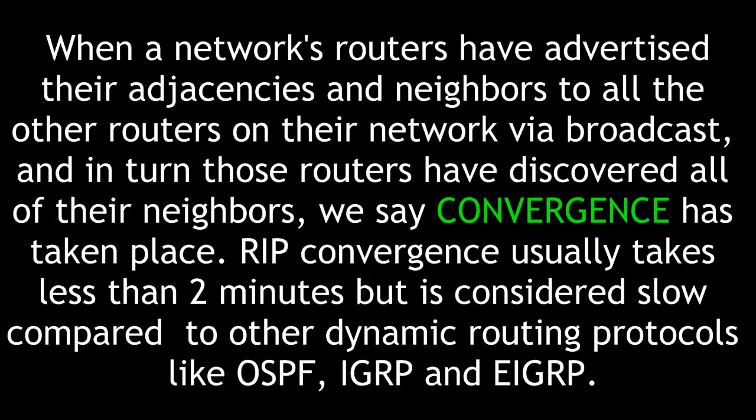When a network's routers have advertised their adjacencies and neighbors to all the other routers on their network via broadcast, and in turn those routers have discovered all of their neighbors, we say convergence has taken place. RIP convergence usually takes less than 2 minutes, but is considered slow compared to other dynamic routing protocols like Open Shortest Path First, IGRP, and EIGRP.